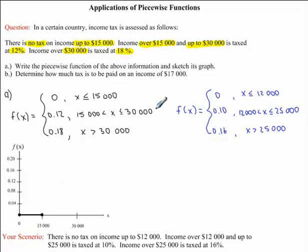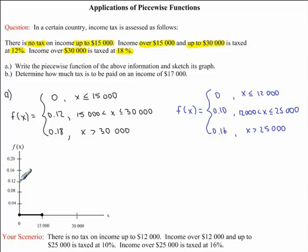Moving to our second interval: x is between $15,000 — not including this number — and $30,000, which it can equal. Along our x-axis, this interval covers anything greater than $15,000 and less than or equal to $30,000. Our f of x is equal to 0.12. Because x cannot equal $15,000, we draw an open circle there. We then draw a line up to and including $30,000, where a closed circle indicates x can equal $30,000.